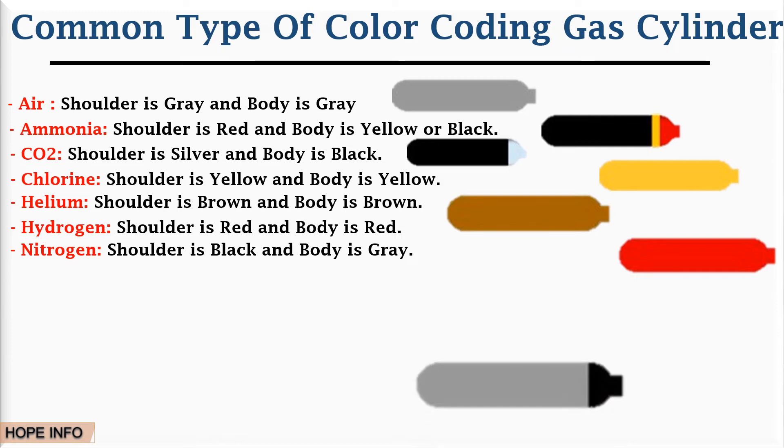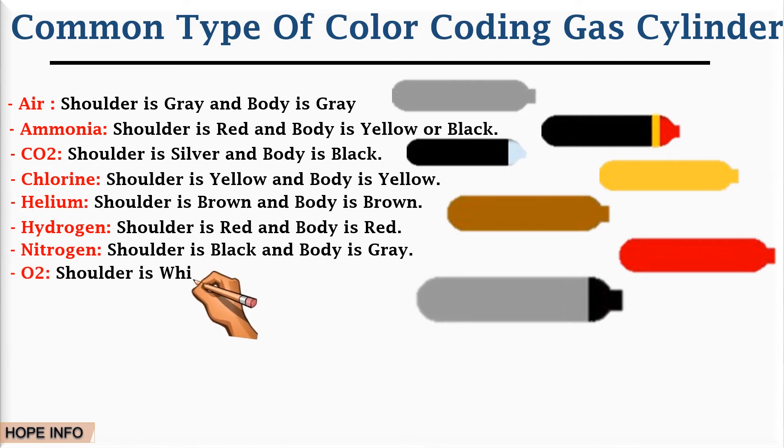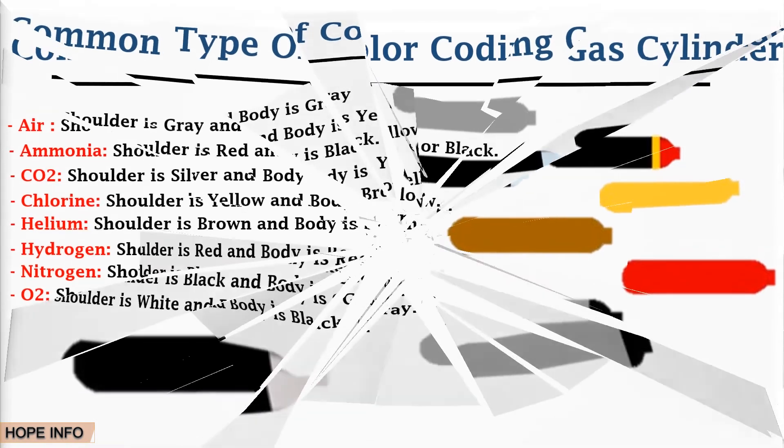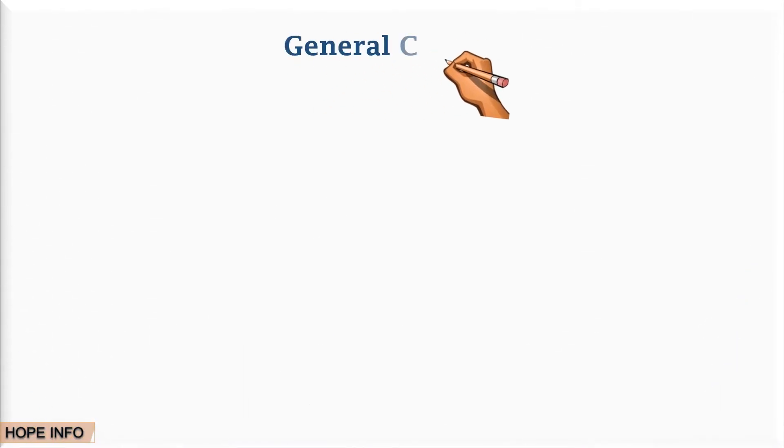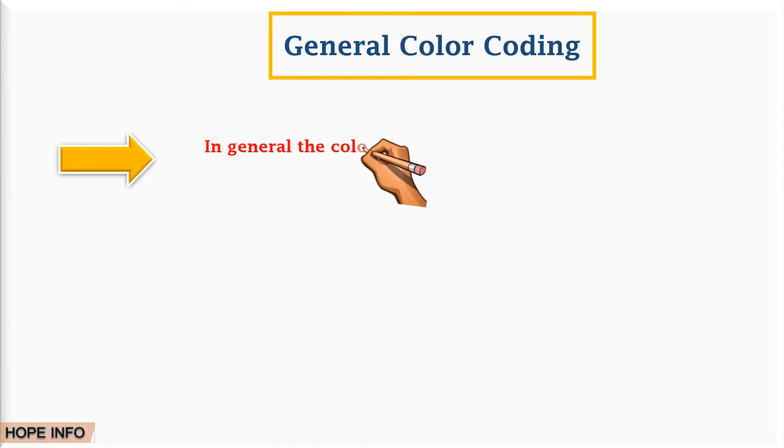Number ten is oxygen - the shoulder is white and body is black. The color of the gas cylinder indicates the hazard but not the fuel. Poisonous and corrosive gas cylinders have yellow color.